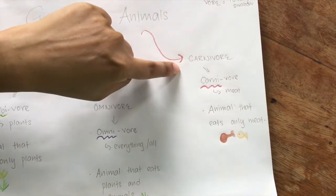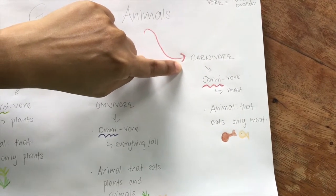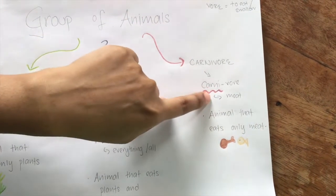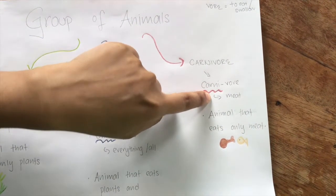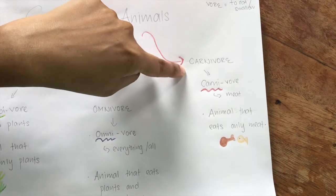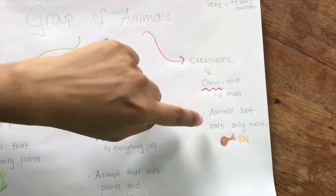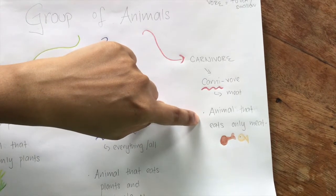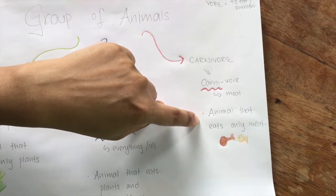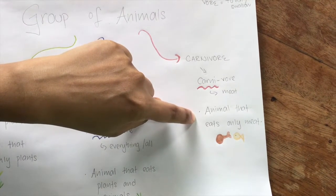Carnivore. 'Carn' means meat. Carnivore is used to describe animals that eat only other animals, or just meat.